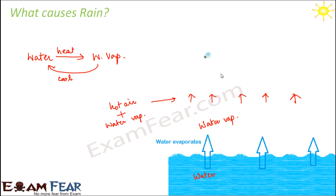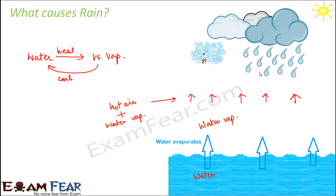These liquid water droplets start accumulating on dust particles present in the atmosphere. The black thing here represents a dust particle and the blue thing represents the liquid water droplets. On each dust particle, liquid water droplets start accumulating. All the water vapor gradually gets converted to liquid water droplets, and these droplets come together and condense — they group together and turn bigger and bigger. This is what makes the cloud.